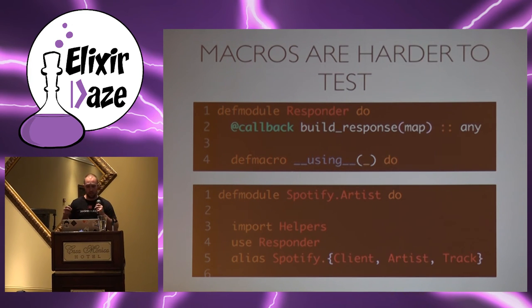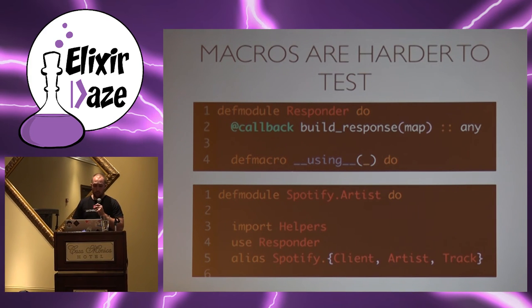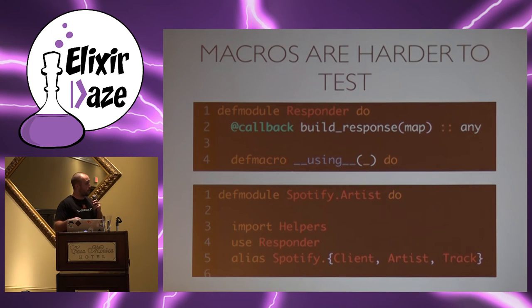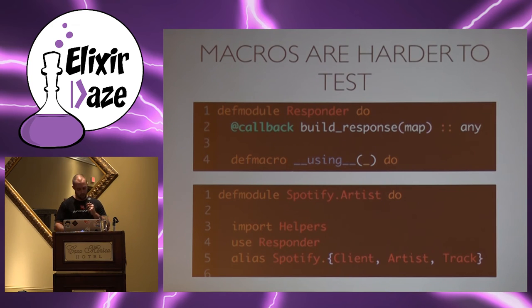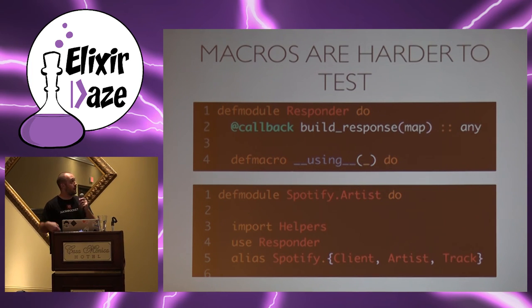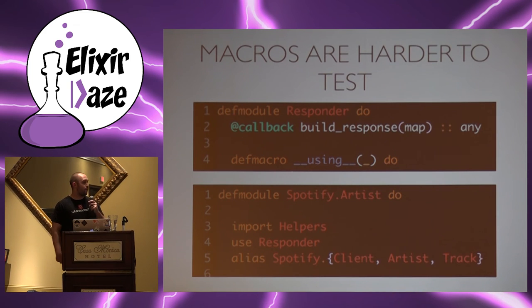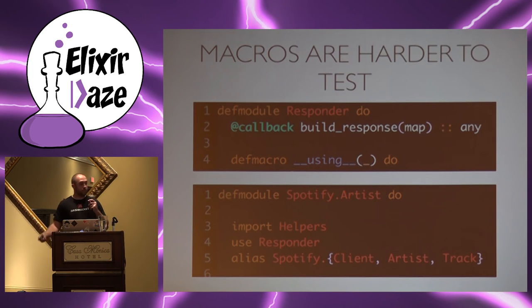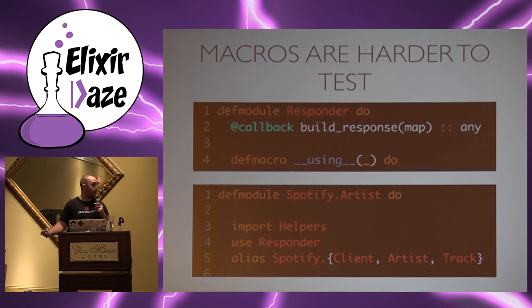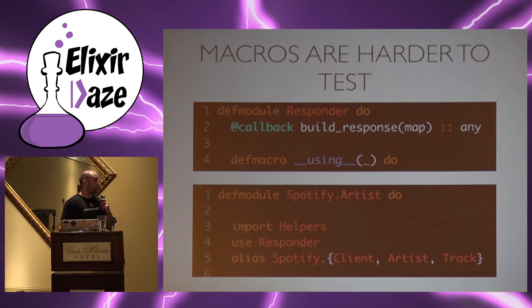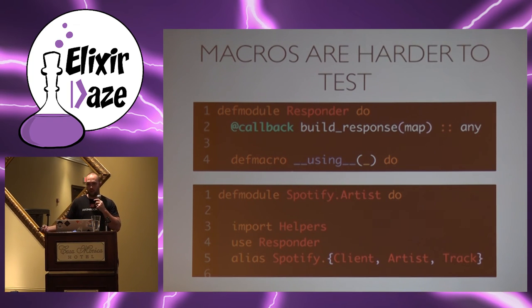All our macros so far have been the defmacro sort, but let's look at the using version with an actual example from my Spotify library. The using macro takes everything inside the block and injects it into the calling module. I have a module called Responder which each of my modules in Spotify EX can use to handle HTTP responses. A Spotify artist module uses the responder — 400 errors log the error, 200 with empty body returns okay, and a response body relies on a callback implemented by Spotify.Artist to determine how to handle the JSON response.